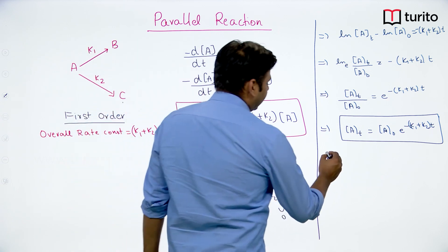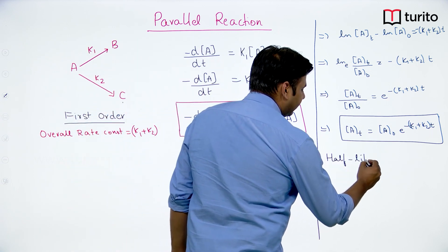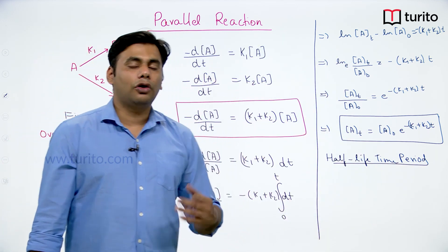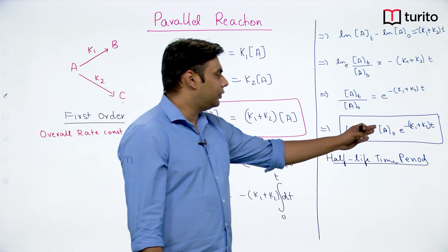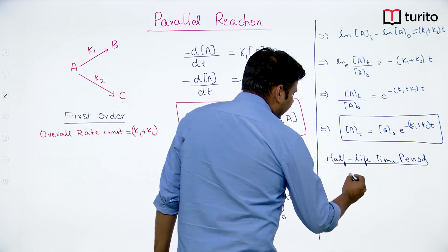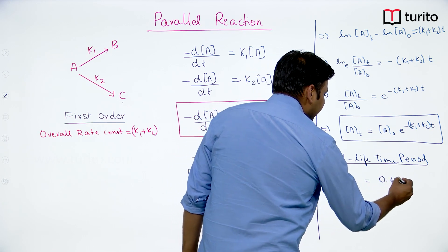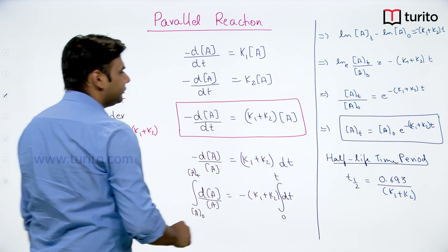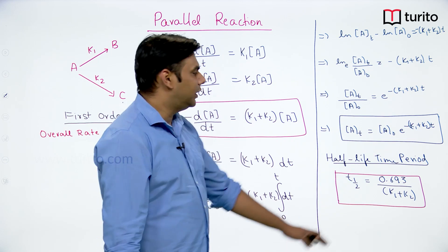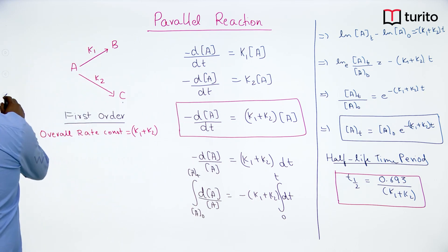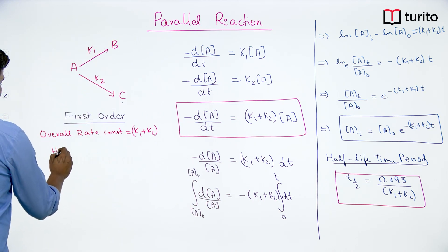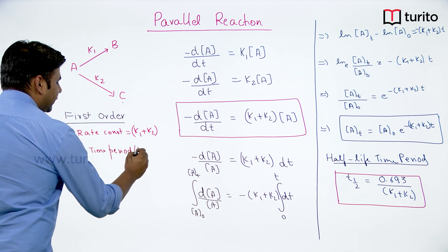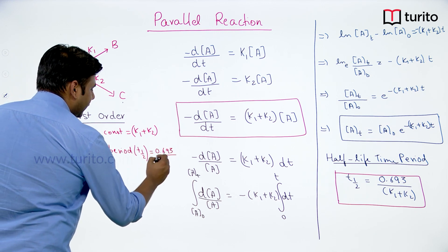Now let us derive the half-life time period. At half-life, the concentration of A has reduced to half its original value. Substituting A_t = A₀/2 into the integrated expression, we get: t_half = 0.693 / (k1 + k2). This is similar to the standard first order half-life formula, just replacing k with the overall rate constant k1 + k2, since A is being consumed through both reaction pathways simultaneously.